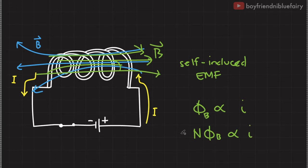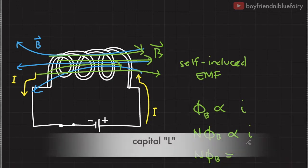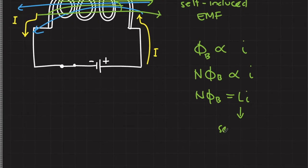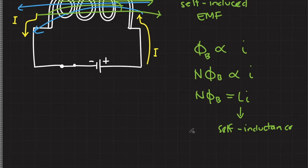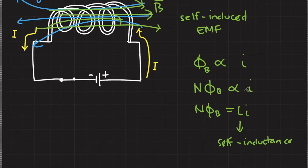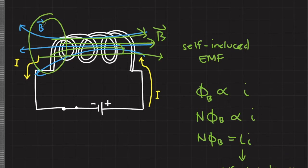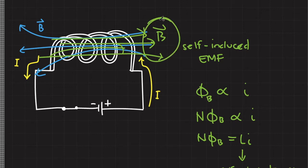In order for the proportionality to become an equal sign, we must multiply by a constant. For self-induced EMF, instead of capital M, we represent the proportionality constant with capital L, and this constant is called self-inductance. Unlike mutual inductance, self-inductance is caused by the coil's own magnetic field. A varying current through the inductor produces a varying magnetic field, which produces a varying magnetic flux, resulting in an induced EMF. By Lenz's law, this induced EMF produces a magnetic field that opposes the change in magnetic flux.